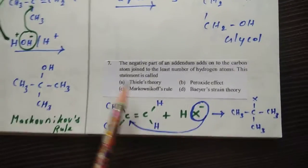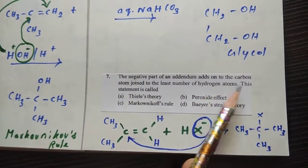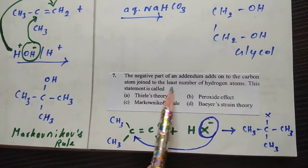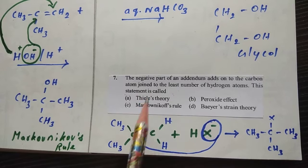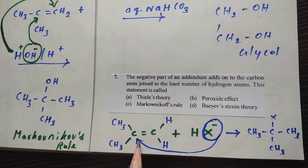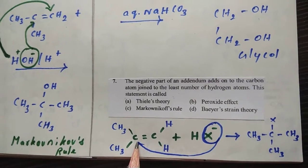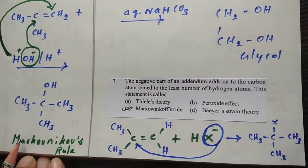Seventh question: The negative part of the addendum adds to the carbon atom joined to the least number of hydrogen atoms. This is a theory. This statement is called... we know the negative part is added to the carbon which contains the least number of hydrogens is known as Markovnikov's rule addition. So your answer is option C, friends. Thank you.